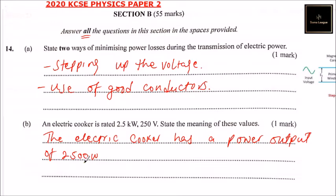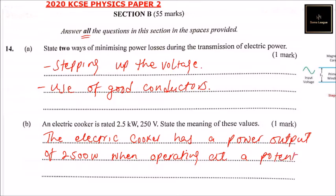Note that 'kilo' means a thousand, so kilowatts gives us 2500 watts. The cooker operates at a potential of 250 volts. Power equals voltage multiplied by current.